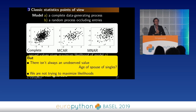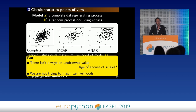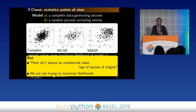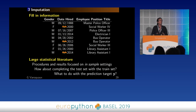I would like to say that this classic statistical point of view is not completely of interest to us here, and we shouldn't take those results as fundamental results for machine learning. Two reasons: first, there is not always a non-observed value — what is the age of the spouse of people who are single? — so even this assumption is broken in many datasets. Second, we're not trying to maximize likelihoods, we're trying to predict. Based on this, we can just do machine learning. But the machine learning toolkit still doesn't work — I've given you theory, not practice.